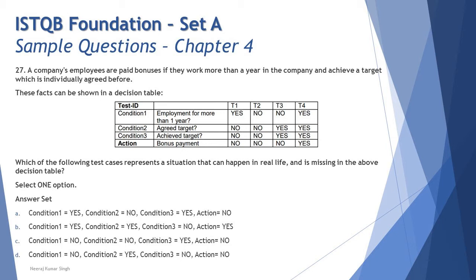Option B says: condition one is yes, condition two is yes, condition three is no, and action is yes. The employee has one year of experience and agreed to a target, but did not achieve it — yet the action says yes (bonus given). That's unrealistic: he participated but did not win, so no bonus. This is again an unrealistic situation.